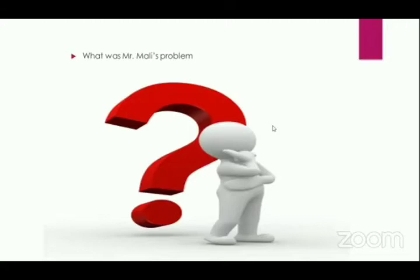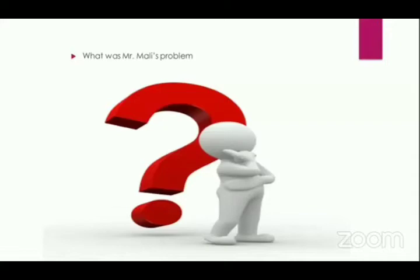Mr. Mali is the farmer who sold the cow that he thought was problematic. I think the problem he had was that he didn't have records to show how the cow was performing. If he had many cows and the production of the rest was not good, he just concluded this cow is also not good. But if he had individual records for each cow, he would have been able to know that the cow he was selling was actually his best performing cow.